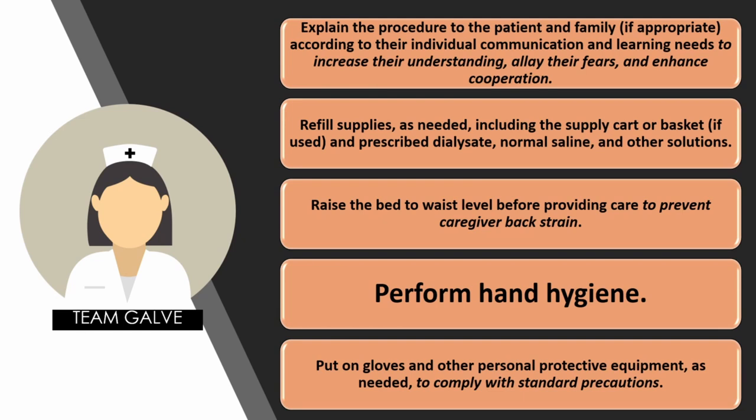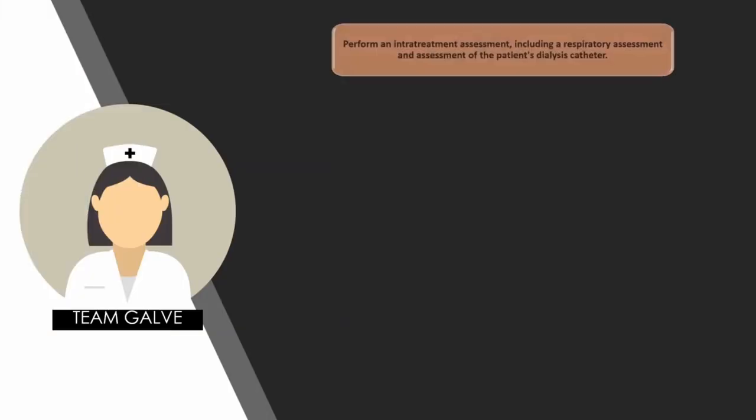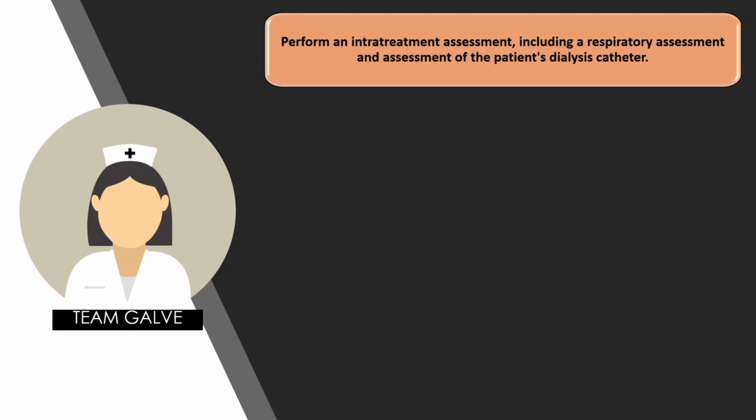Perform an intra-treatment assessment, including a respiratory assessment and assessment of the patient's dialysis catheter. Check the dialysis line carefully — especially if the central line is newly placed. For a femoral line, you must have backflow to check patency. The doctor may also order an ultrasound to confirm the line is patent and in place.